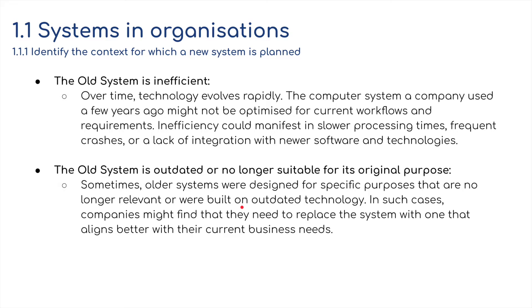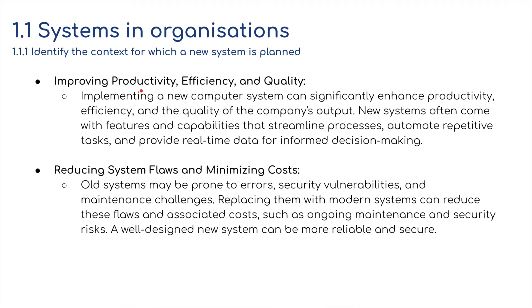The old system may be outdated or no longer suitable for its original purpose. Sometimes older systems were designed for specific purposes that are no longer relevant, or were built on outdated technology. In such cases, companies might need to replace the system with one that better aligns with their current business needs. Implementing a new system can significantly enhance productivity, efficiency, and quality of output. New systems often come with features that streamline processes, automate repetitive tasks, and provide real-time data for informed decision-making.